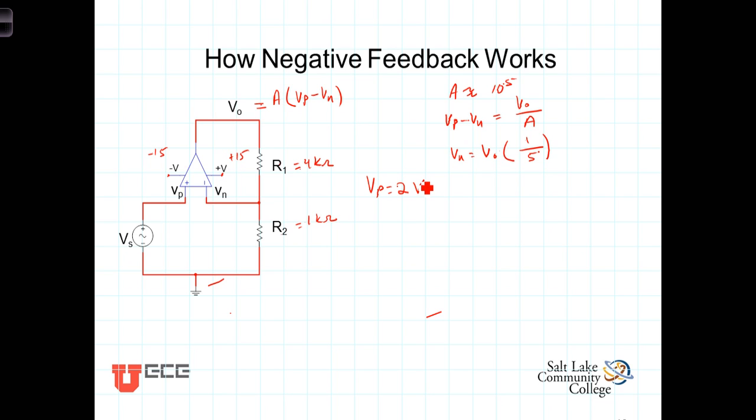An Op Amp doesn't change the output voltage instantaneously. It's limited by something called its slew rate and it doesn't really matter what that is. You'll learn more about that in later classes. But suffice it to say that an instantaneous change here at the input will have some delay before its output is seen or the change is seen at the output.